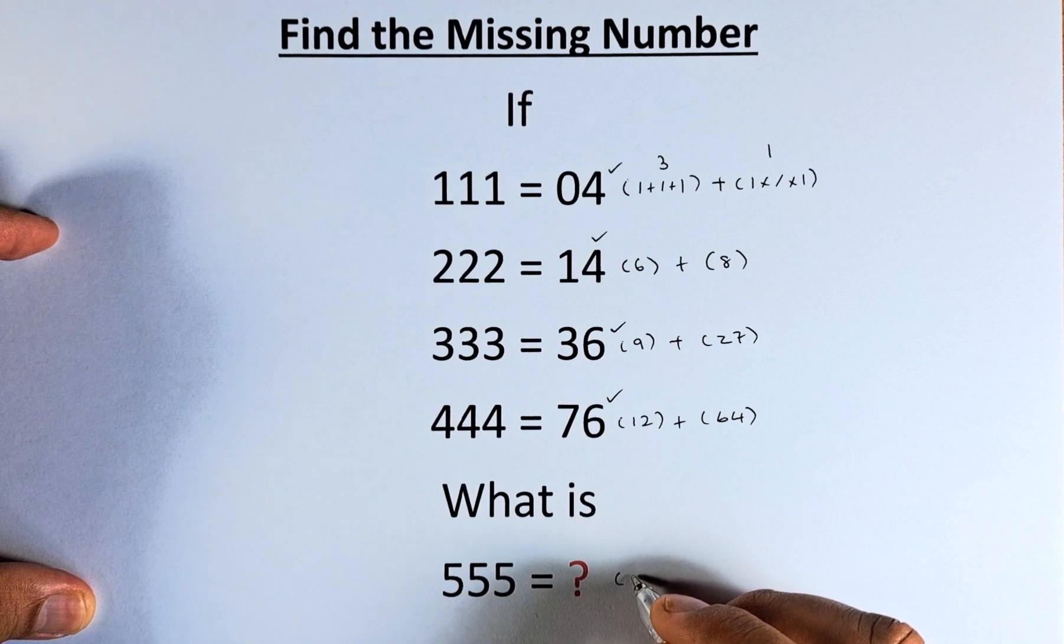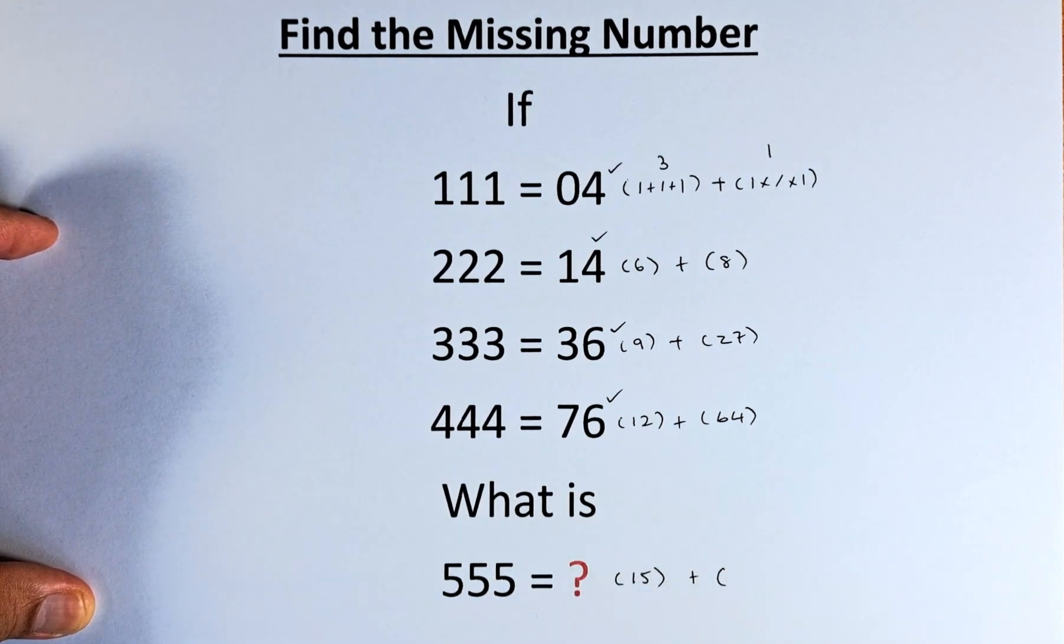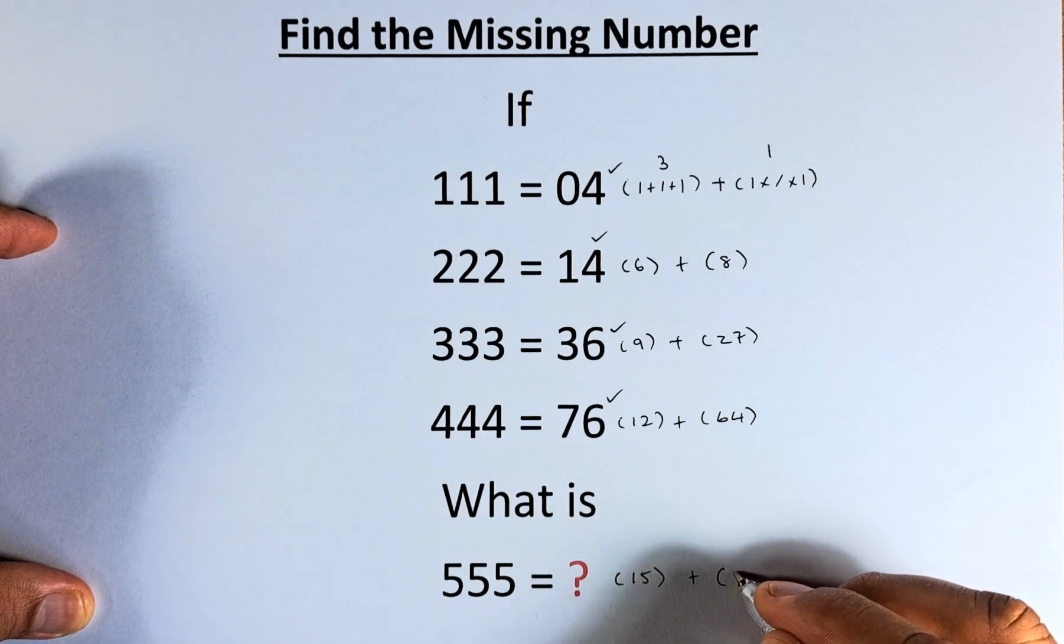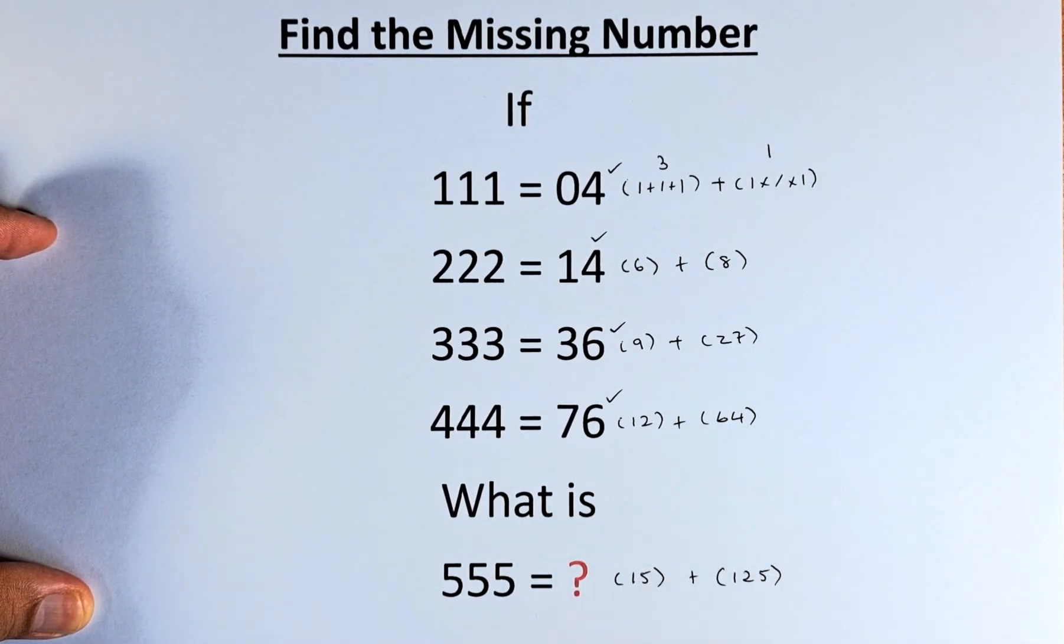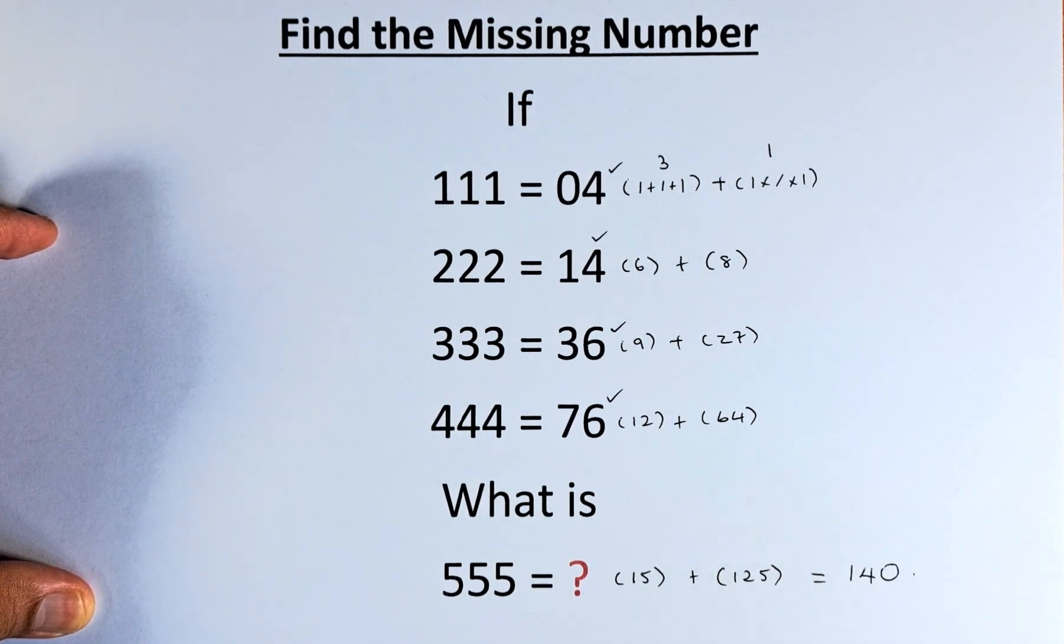5+5+5 is 15, 5×5×5 is 125, so 15+125, the answer is 140.